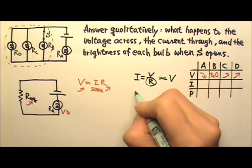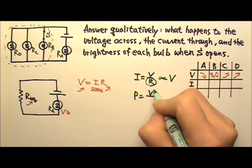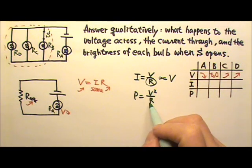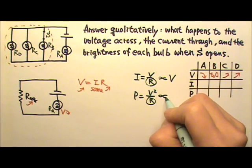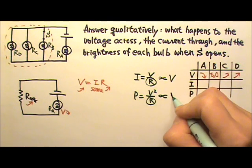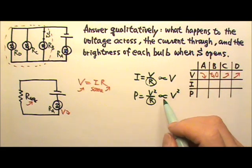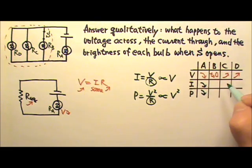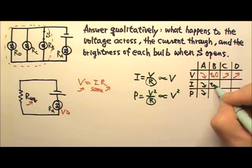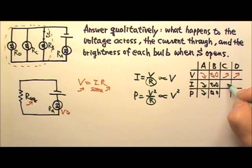Same thing for the power. Power is V squared over R. For each resistor here, the resistance stays the same, so the power consumed by each light bulb is proportional to V squared. That means if the voltage decreases, both of these would decrease. When the voltage becomes zero, the current and power become zero also. And these will be increasing just like the voltage.